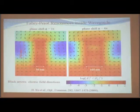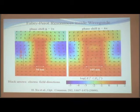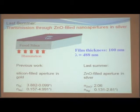Regarding the phase shift: when the direction of the electric field changes once, that means the phase shift is 2 pi. Last summer we did this research with a field index of 100 nanometers and a wavelength of the light of 488 nanometers.